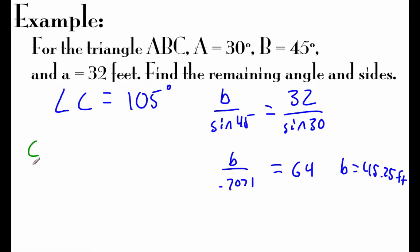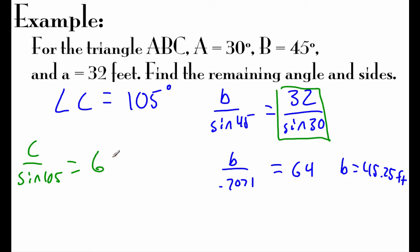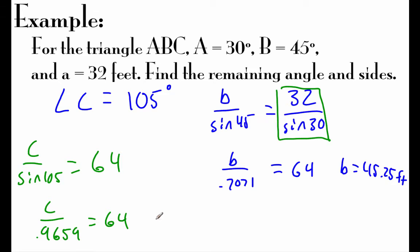For side C, we go with C over sine of 105 degrees equals that same A information, which gave us 64. The sine of 105 degrees to four decimals is 0.9659. Multiplying that decimal to the right-hand side, we get side C to be about 61.82 feet.